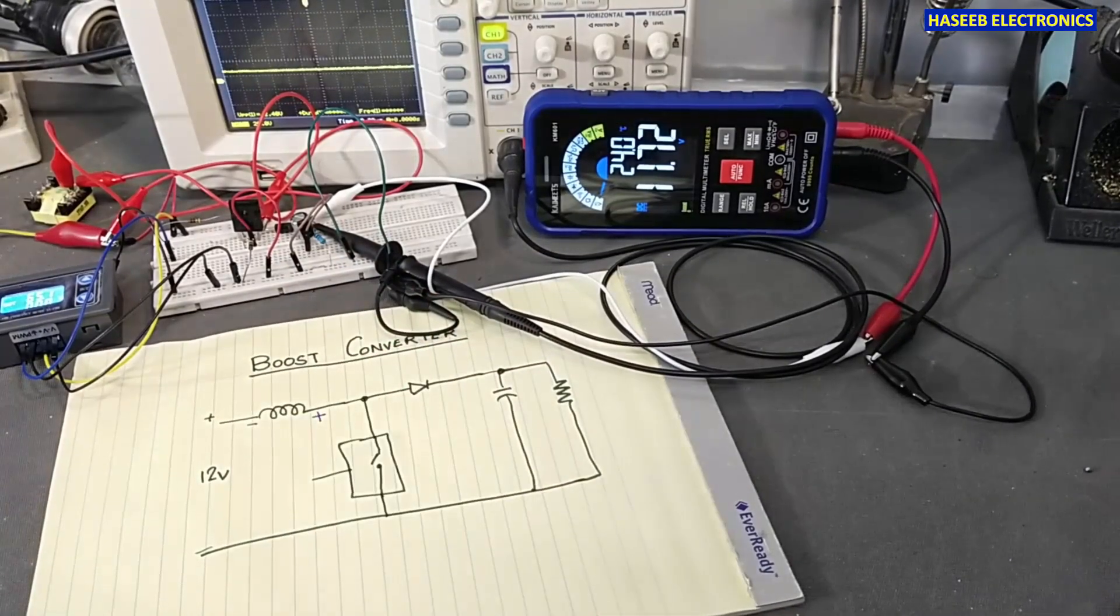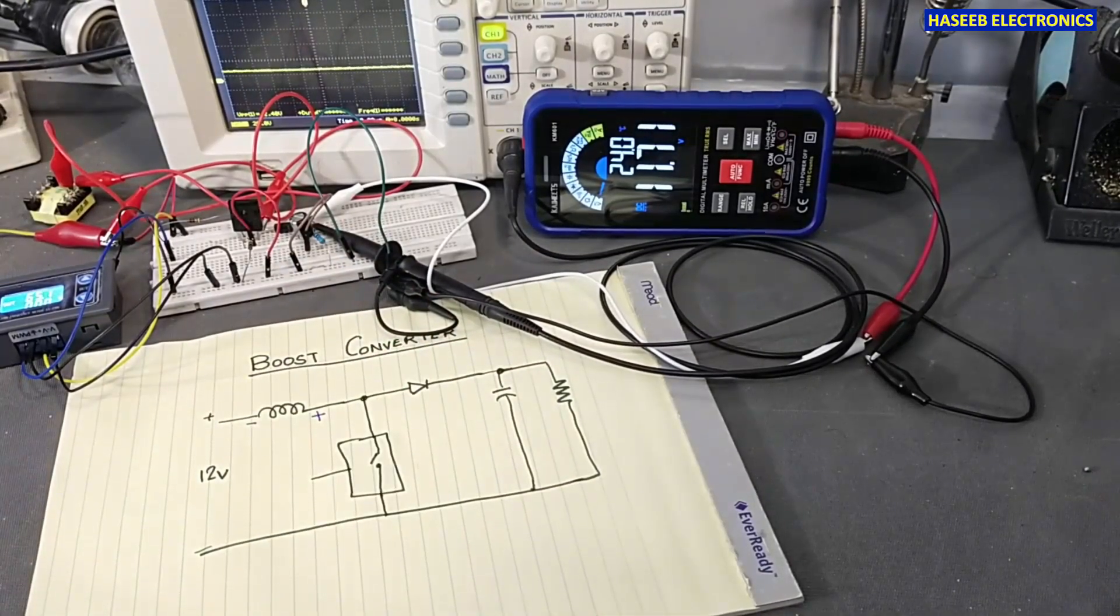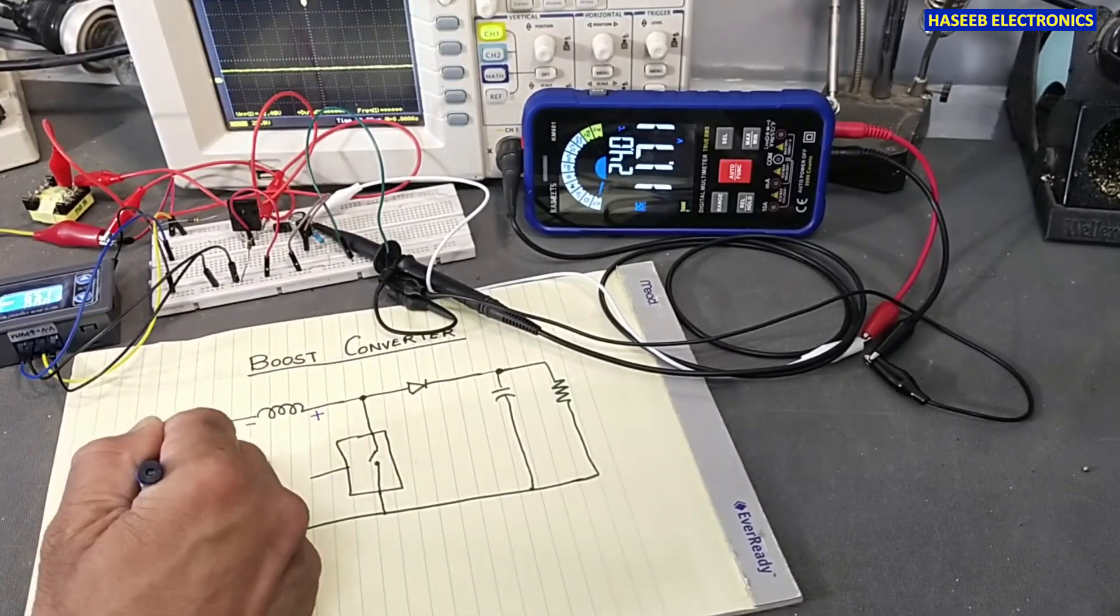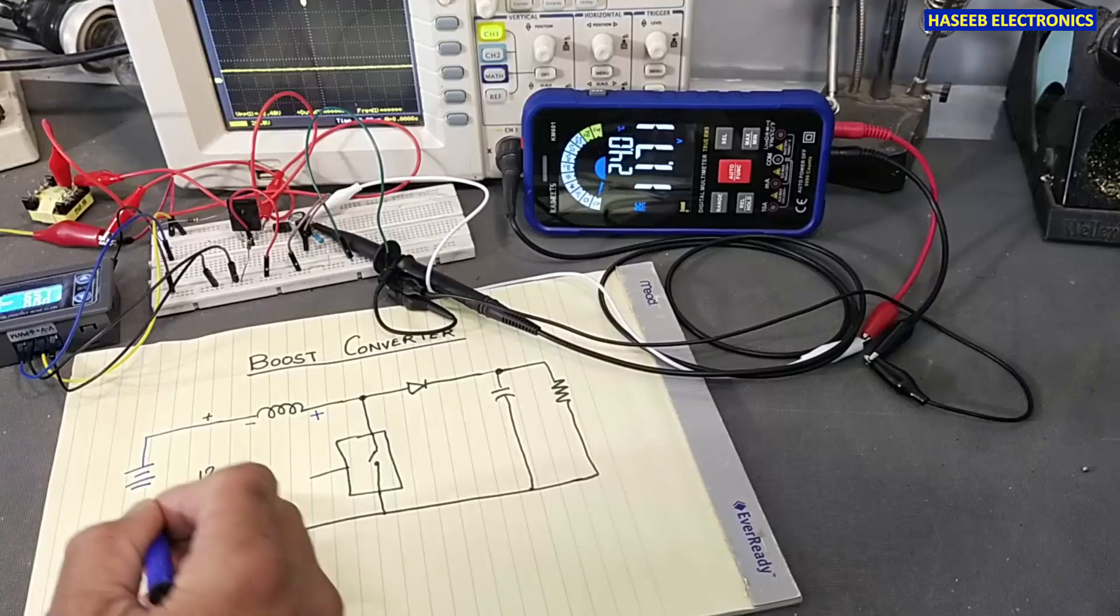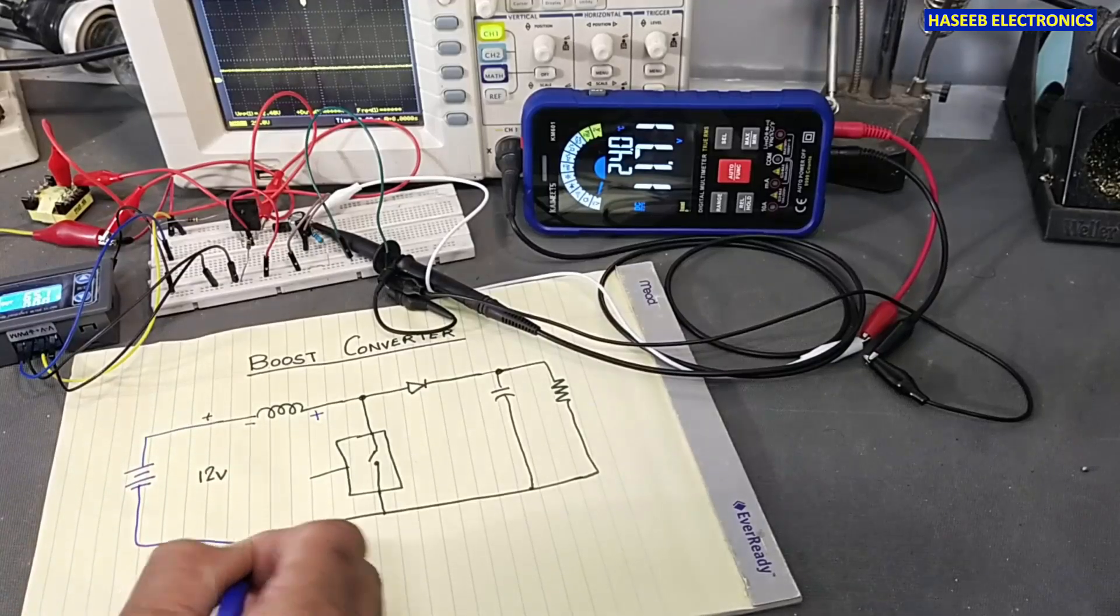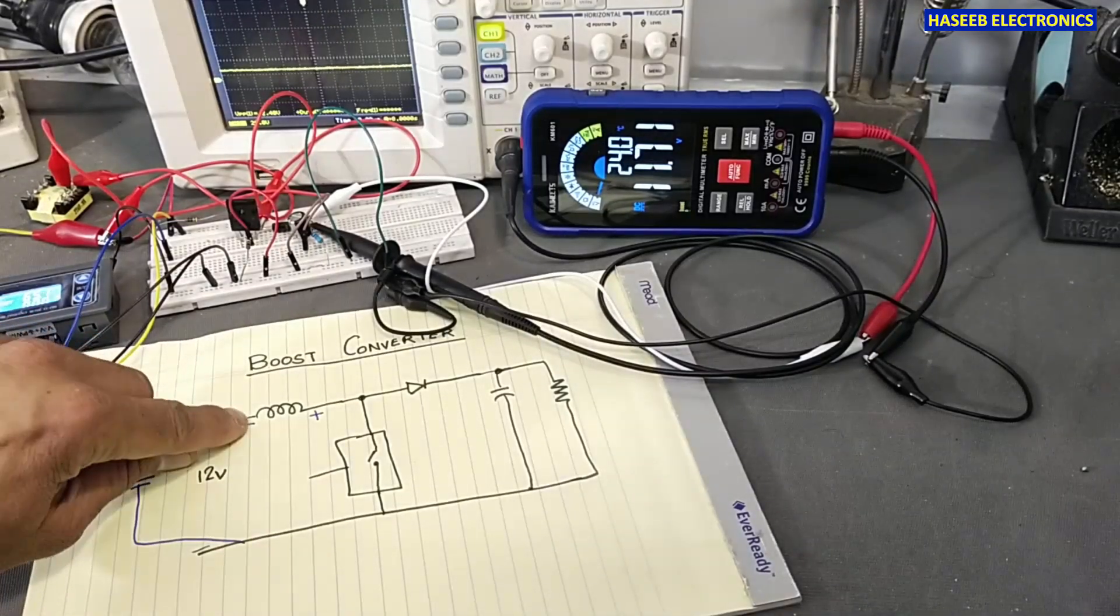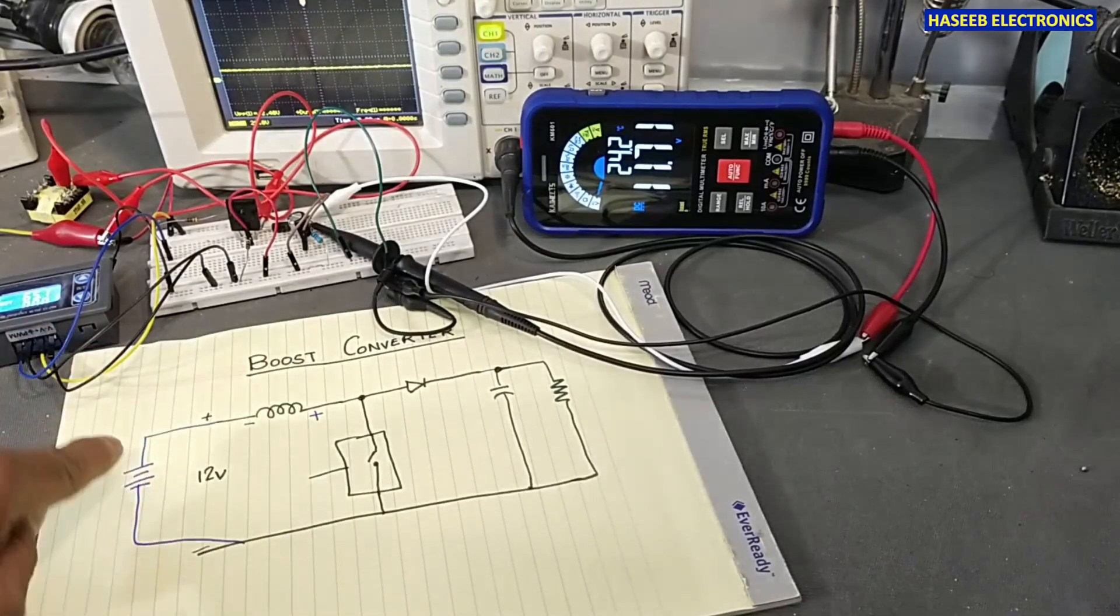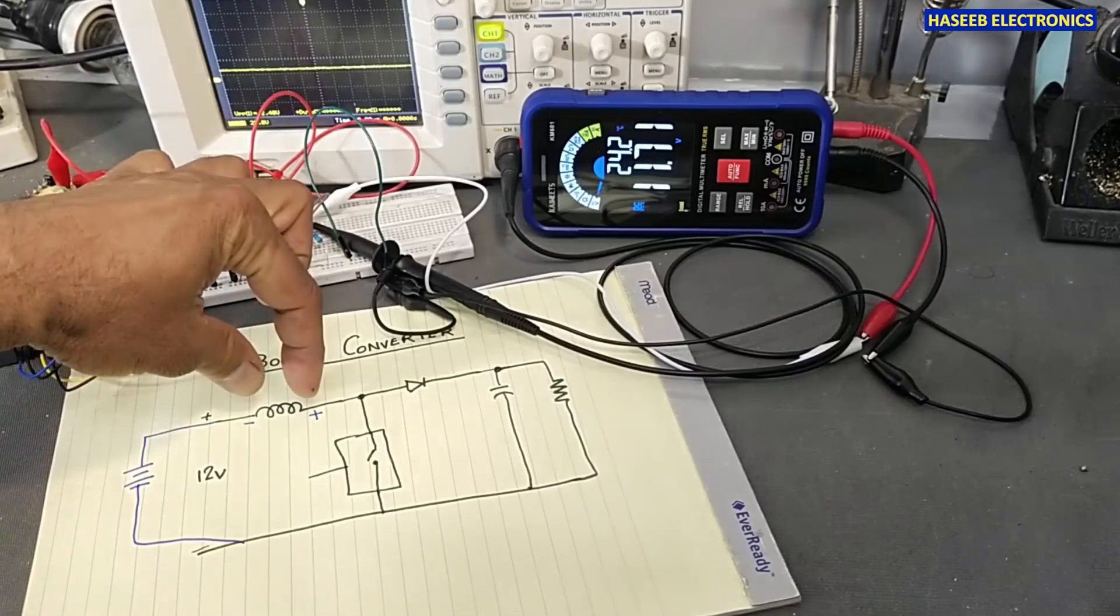So we have two sources here. If we have one source here - positive, negative, positive, negative - so this positive, while this end is now negative, this end is positive. This voltage, plus...